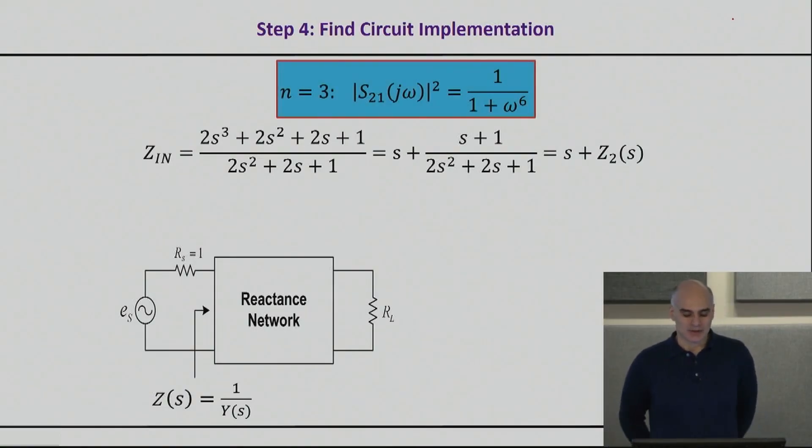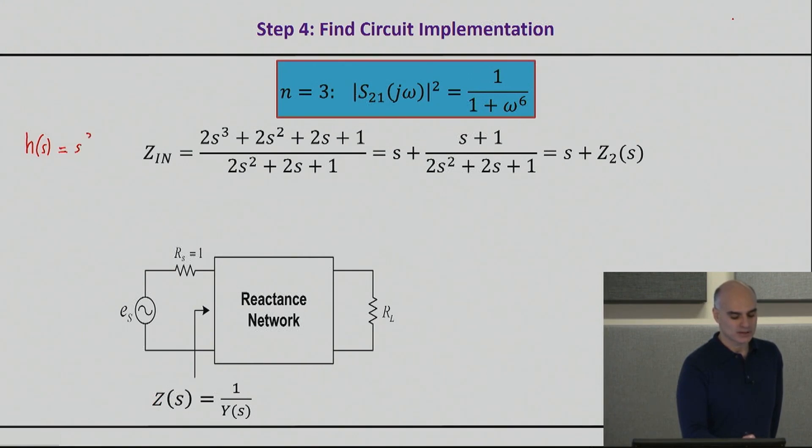Now let's go to the most interesting part. So now I have found my input impedance, and I will start with the input impedance for the implementation I showed you before, the Butterworth implementation, and that one basically was the H of S, the S cube, that yielded that input impedance.